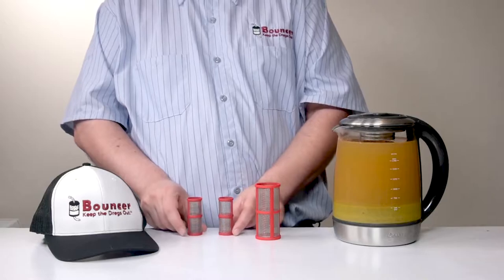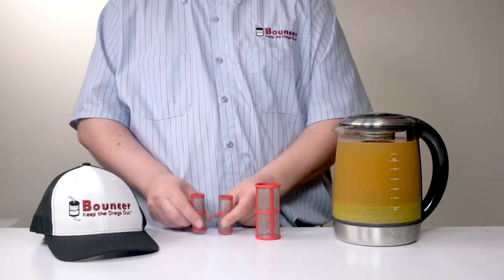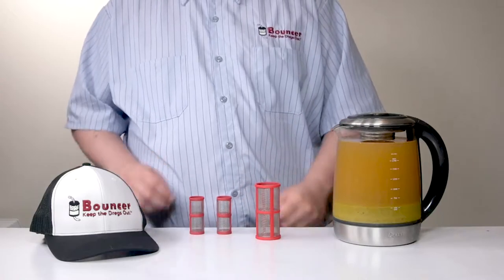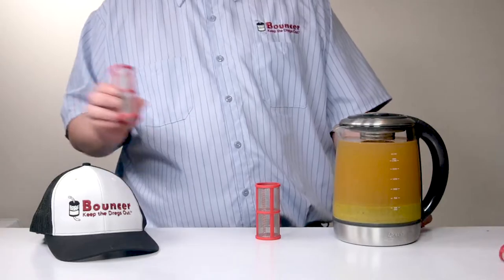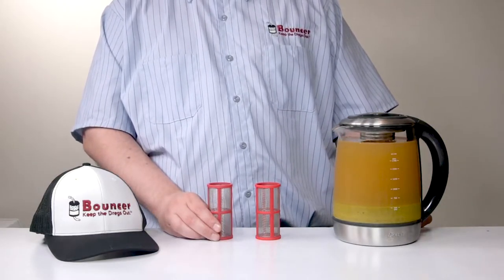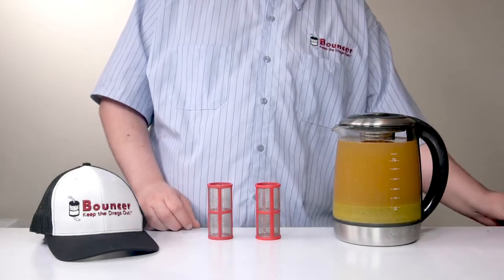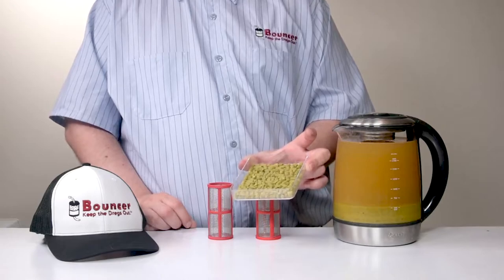Now, a fun fact here is that these two filters have about the same filtering capacity as this one filter by itself. That's because at the end of the day, it really comes down to screen area. And that's really the magic of parallel filters. But the real science is that there's a physical amount of hops that can actually fit inside one of these filters. And it turns out to be about an ounce and a half.